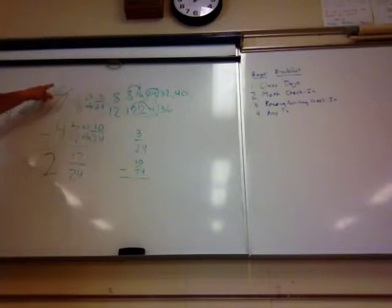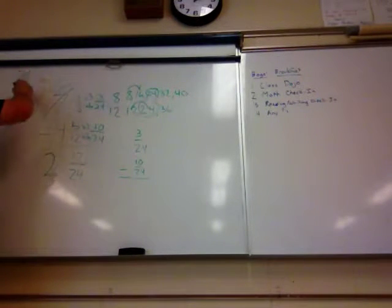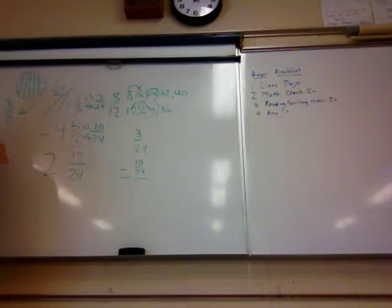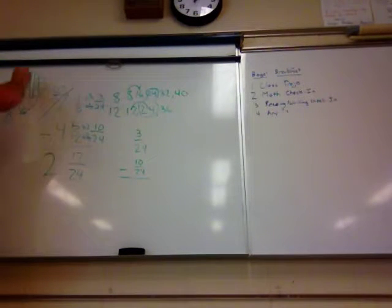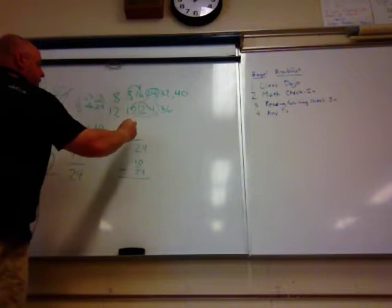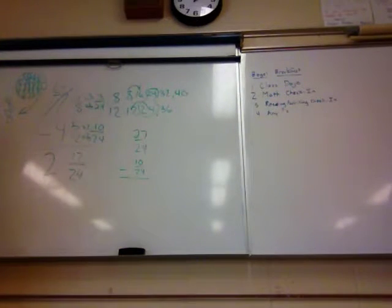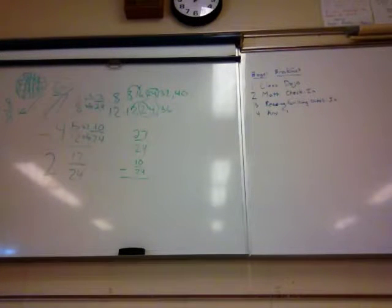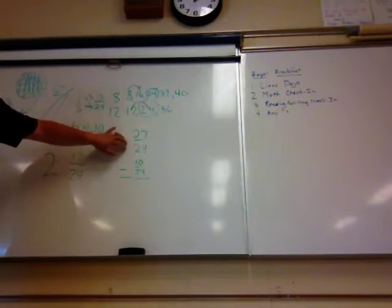So basically what we did here is we took one whole and we said, all right, we need 24 pieces. We took that one whole and we cut it up into 24 pieces, and we have the whole thing, which means we have 24 twenty-fourths. So that's what we're going to add. What is 3 plus 24? 27. Now, can we take 27 twenty-fourths minus 10 twenty-fourths? Yeah, absolutely.